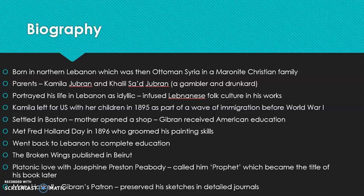Kamila left for the US with her children in 1895 because of her husband's arrogance — he was a gambler, a drunkard, and never took care of the family. She left as part of a wave of immigration that took place before World War I. In the US, they settled in Boston where Kamila opened a shop to make a living. Gibran received an American education and became proficient in the English language.